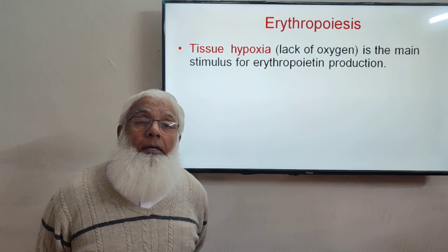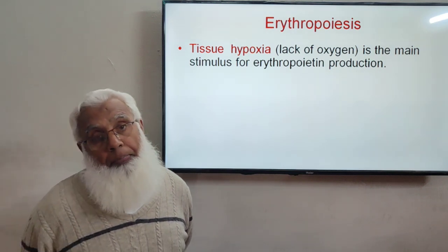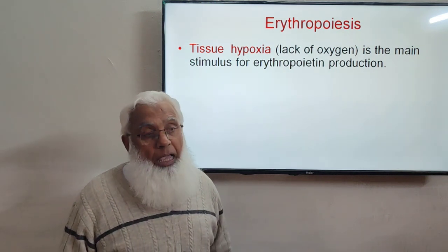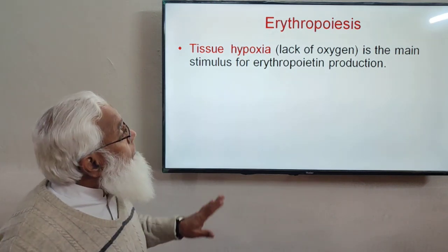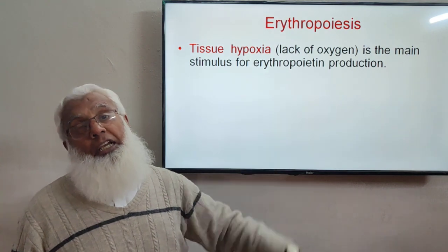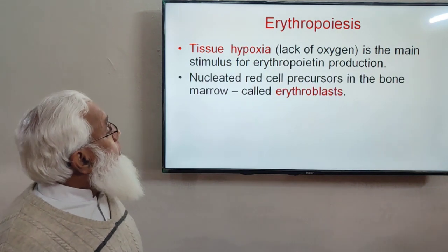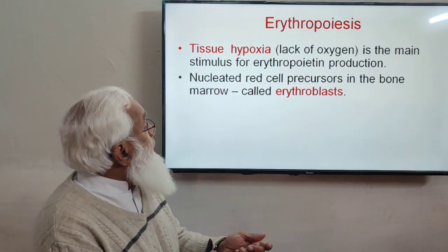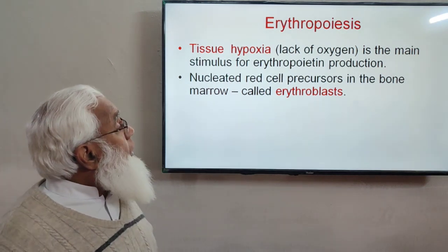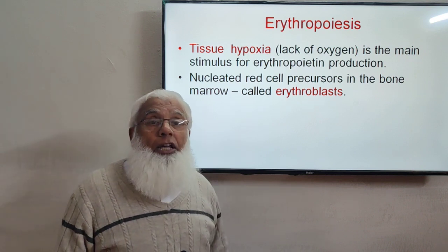Tissue hypoxia is very important for stimulating erythropoietin production in the kidneys. Since RBCs supply oxygen to all tissues, if there is a deficiency of oxygen to the tissues, this hypoxia stimulates the production of erythropoietin. Erythropoietin production occurs in the kidneys. The nucleated red cell precursors in the bone marrow are called erythroblasts.